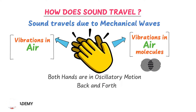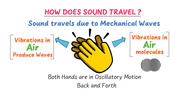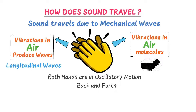Thus, it is vibrations or oscillations within the air that enable sound to travel from one corner to the other. Remember that vibrations or oscillations within the air produce mechanical waves known as longitudinal waves. Therefore, we say that sound travels due to mechanical waves, which are longitudinal waves.